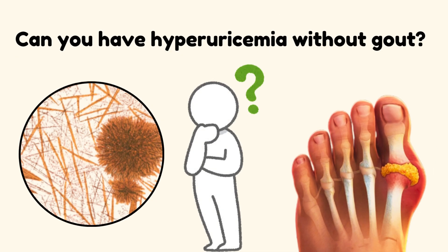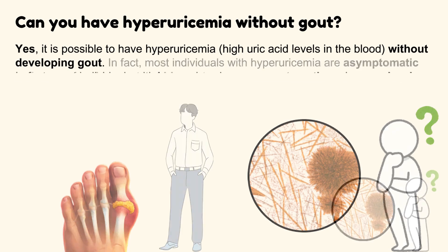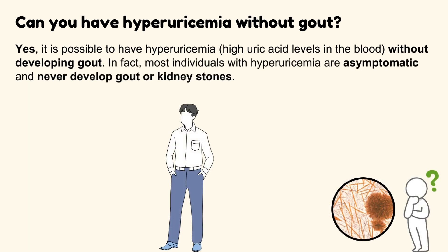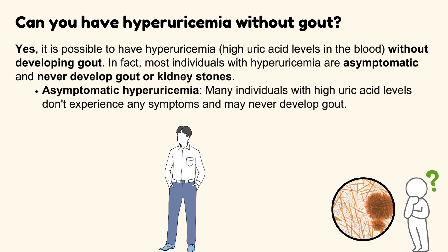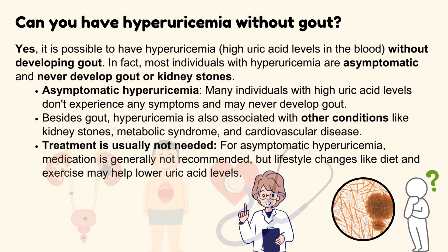Can you have hyperuricemia without gout? Yes, it is possible. In fact, most individuals with hyperuricemia are asymptomatic and never develop gout or kidney stones. Besides gout, hyperuricemia is also associated with other conditions like kidney stones, metabolic syndrome, and cardiovascular disease. For asymptomatic hyperuricemia, medication is generally not recommended, but lifestyle changes like diet and exercise may help lower uric acid levels.